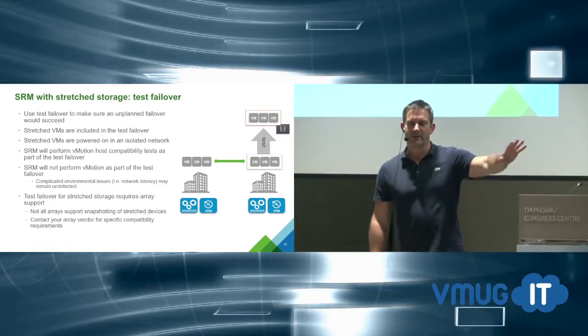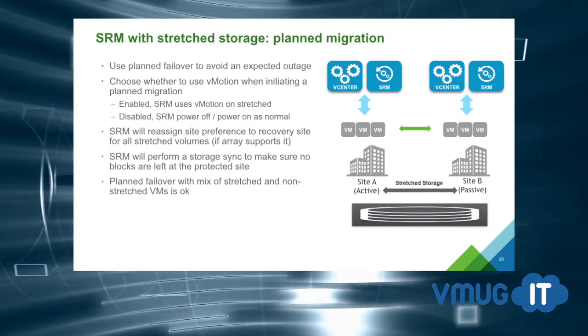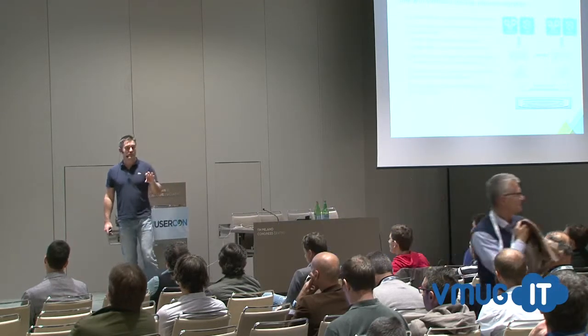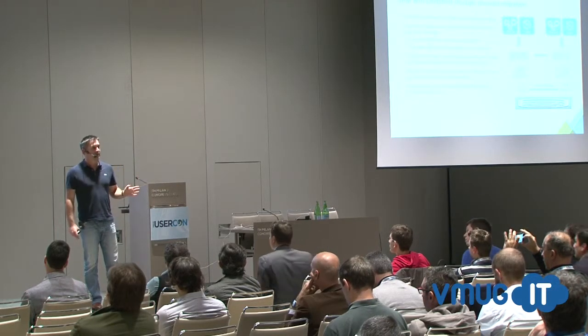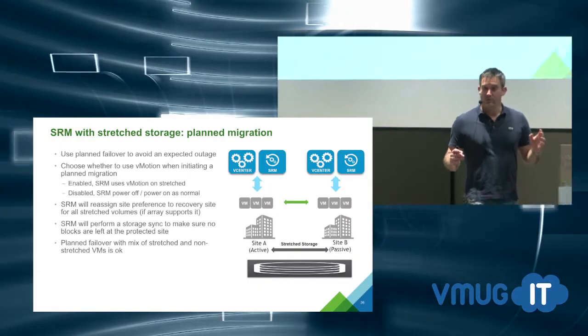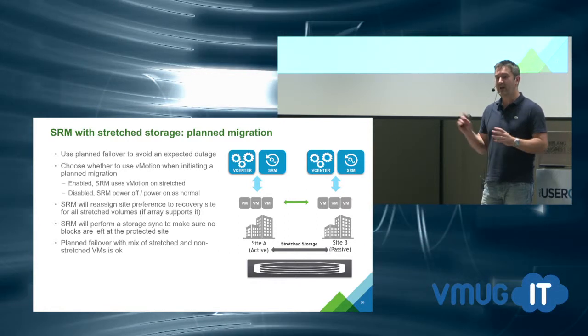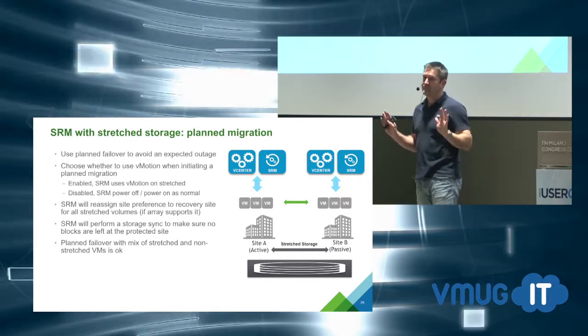In that situation, we can perform checks to verify that the vMotion or restart would have succeeded had we had the chance to do the snapshot. For planned migration, we detect the storage as vMotionable and vMotion the VMs over in the sequence the ops team wants. If they want the VMs powered off and on instead of vMotioned, they can choose that — we put that option in because customers always ask for it, so it was easier to add the checkbox.